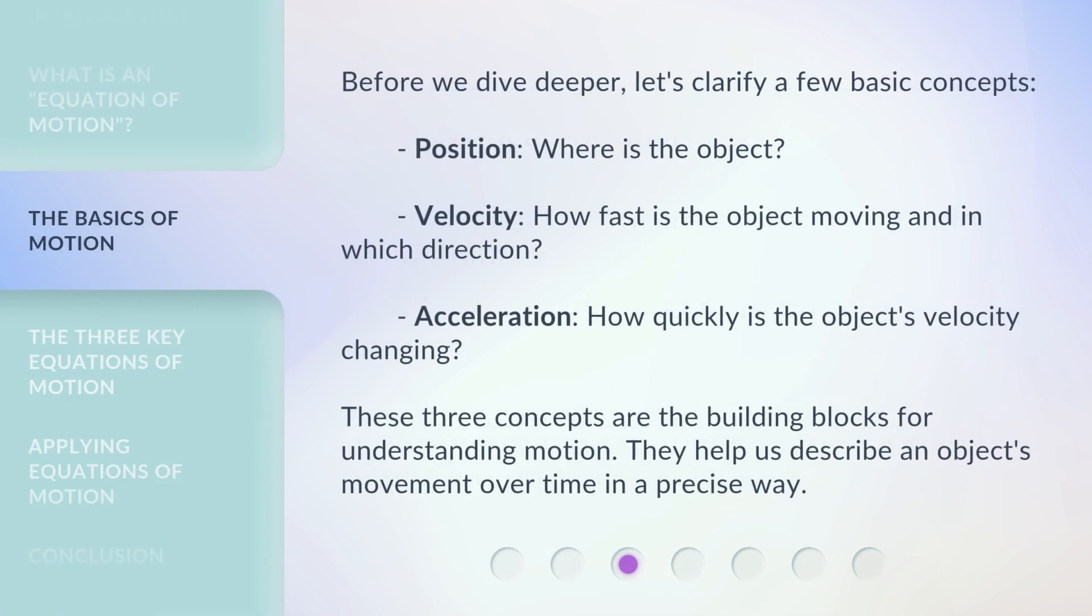Before we dive deeper, let's clarify a few basic concepts. Position: Where is the object? Velocity: How fast is the object moving and in which direction? Acceleration: How quickly is the object's velocity changing? These three concepts are the building blocks for understanding motion. They help us describe an object's movement over time in a precise way.